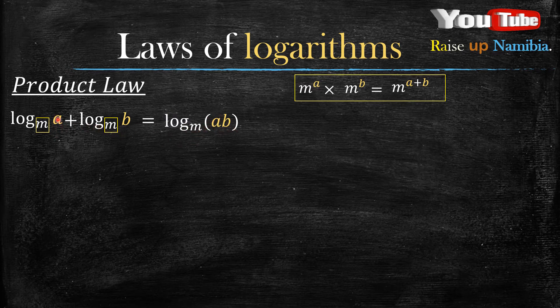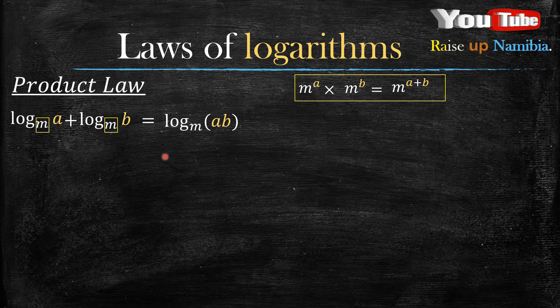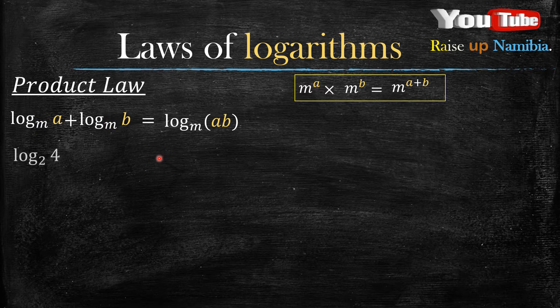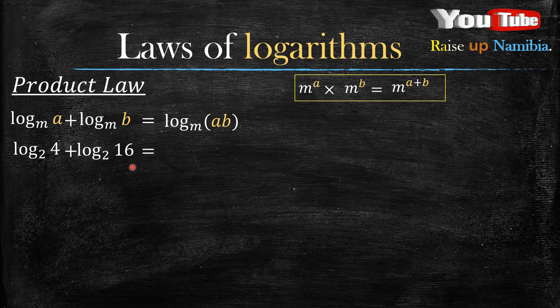If you don't understand this law, worry not, because we will be getting into examples that will enlighten your understanding. Let's get into example number one. We have log base 2 of 4, and then we add to it log base 2 of 16. What will the answer be? Always check your bases. Are your bases the same?